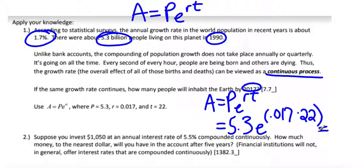So you're going to do 5.3, and then go find your E button on your calculator. Calculator is going to put those parentheses in. You type in the rest, and let's see, 7.7-ish. And remember, those are billion people.